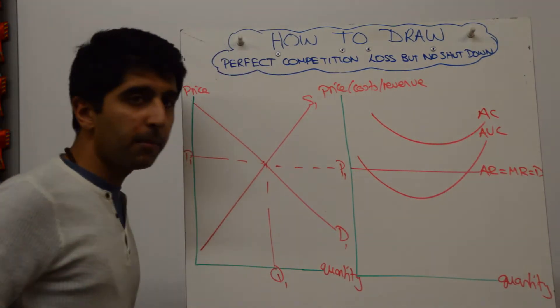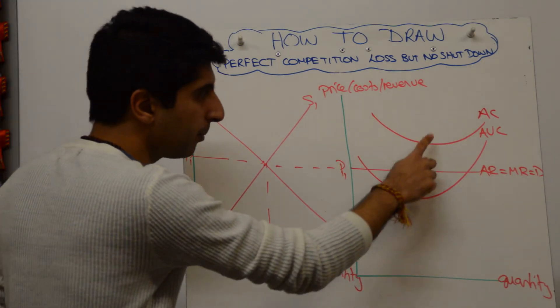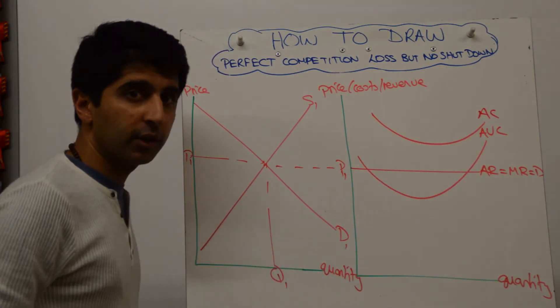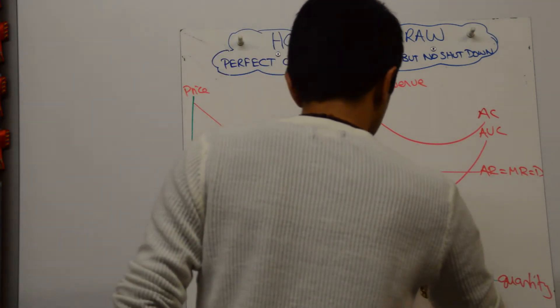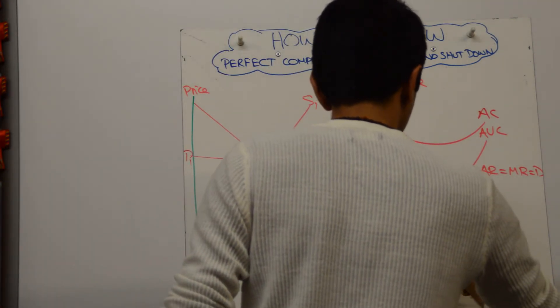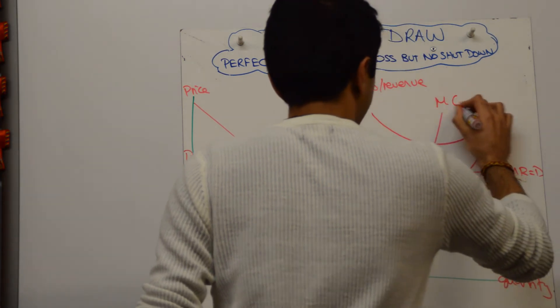Then you've got to draw your marginal cost curve, cutting the minimum points of both cost curves. Something along these lines — there's your MC.